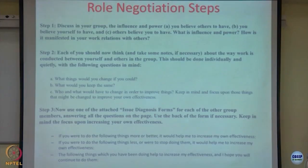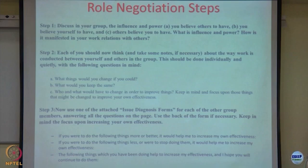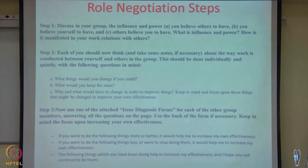Now use one of the issue diagnostic forms. These forms generally include questions such as: 'If you were to do the following things more or better, it would help me increase my own effectiveness.' In a way, I am extending a contract to the other group member — saying that if you were to do these things, it will make me more effective in my role. Also: 'If you were to do the following things less or stop doing them, it would help me increase my effectiveness. And the following things you have been doing help my effectiveness — I hope you will continue.'